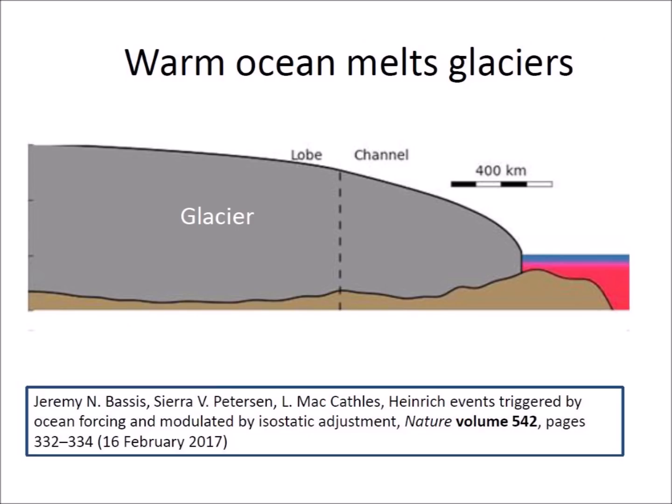Periods of rapid ice disintegration are known as Heinrich events. When icebergs drift and melt, the dirt that they carry settles onto the ocean floor as layers of sediment that help to identify Heinrich events. Glaciers that touch the ocean are very sensitive to ocean warming, which causes increased calving of icebergs. Warm oceans may be the answer to the energy paradox that attempted to find the source of energy that melted the giant ice sheets over North America.